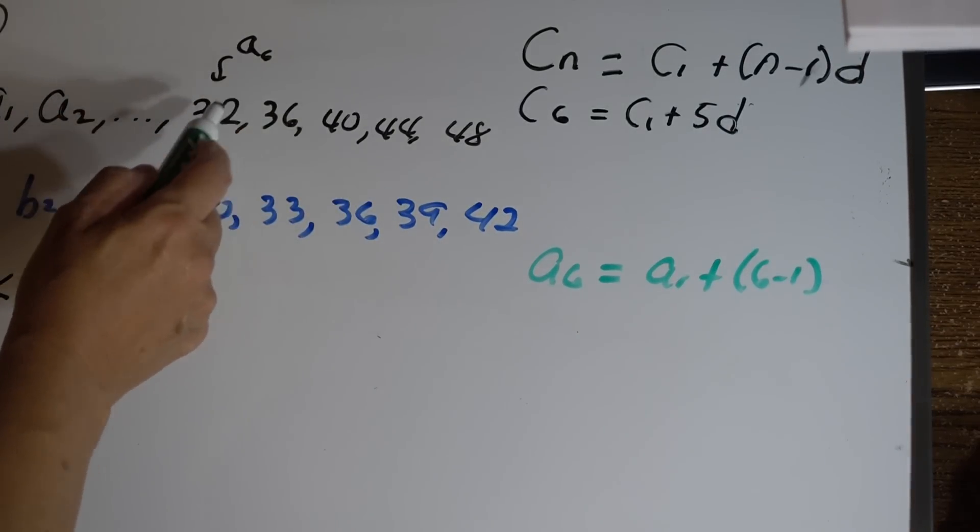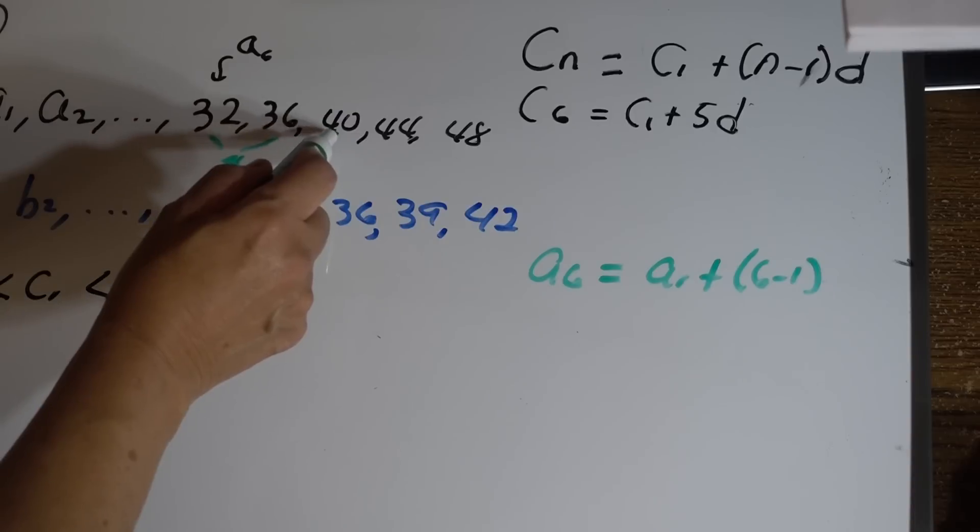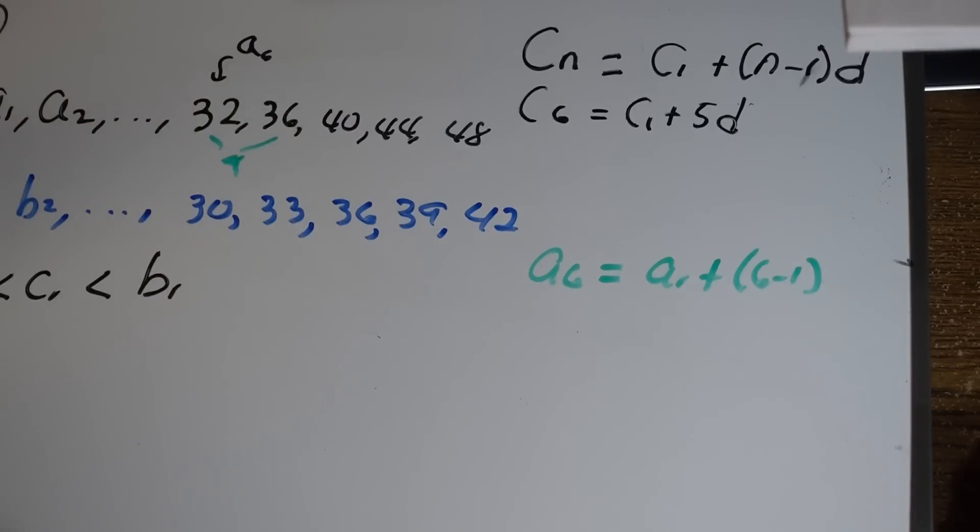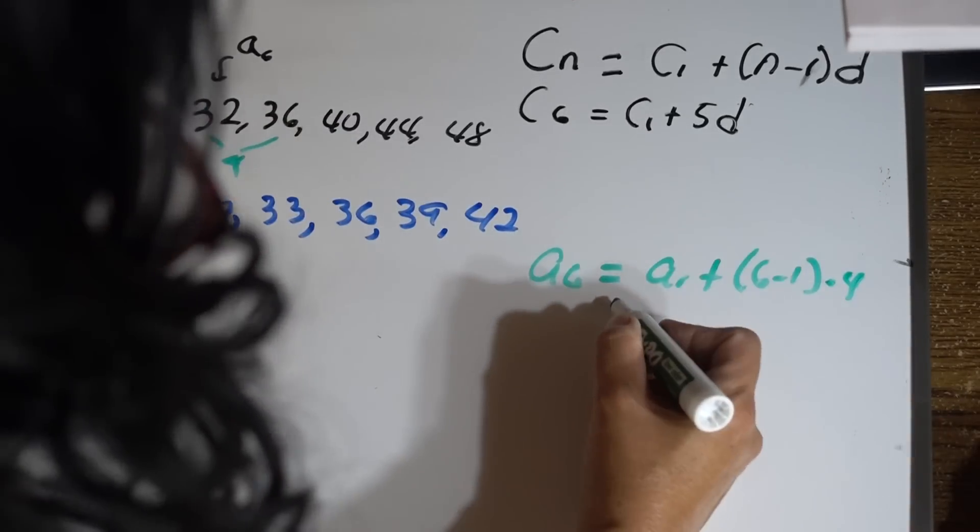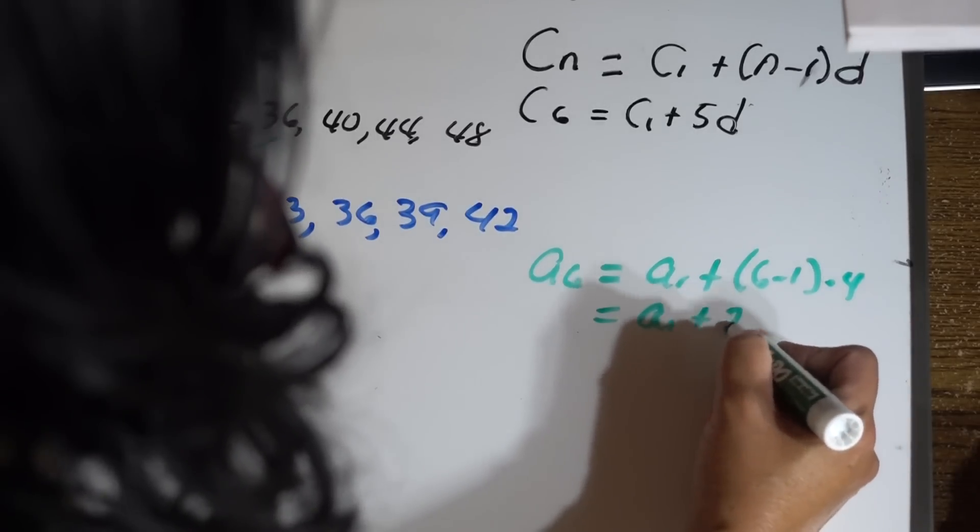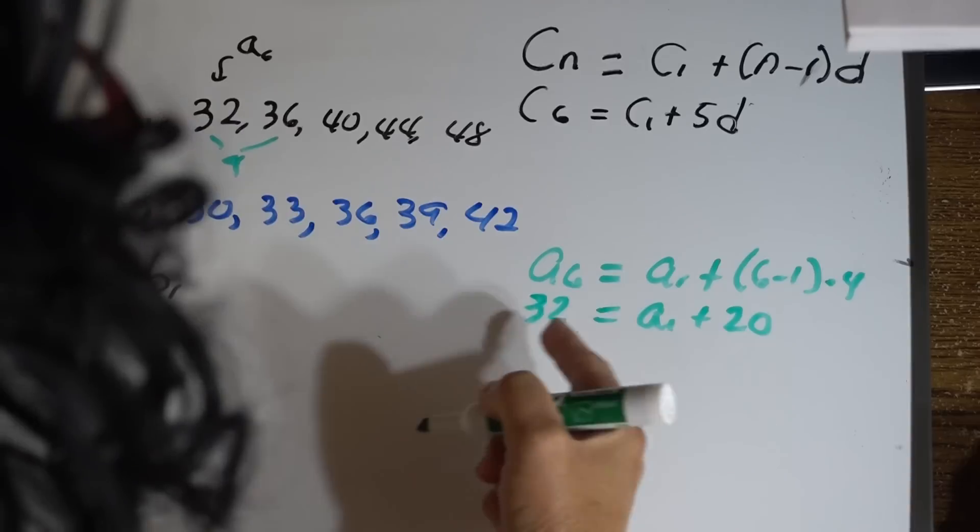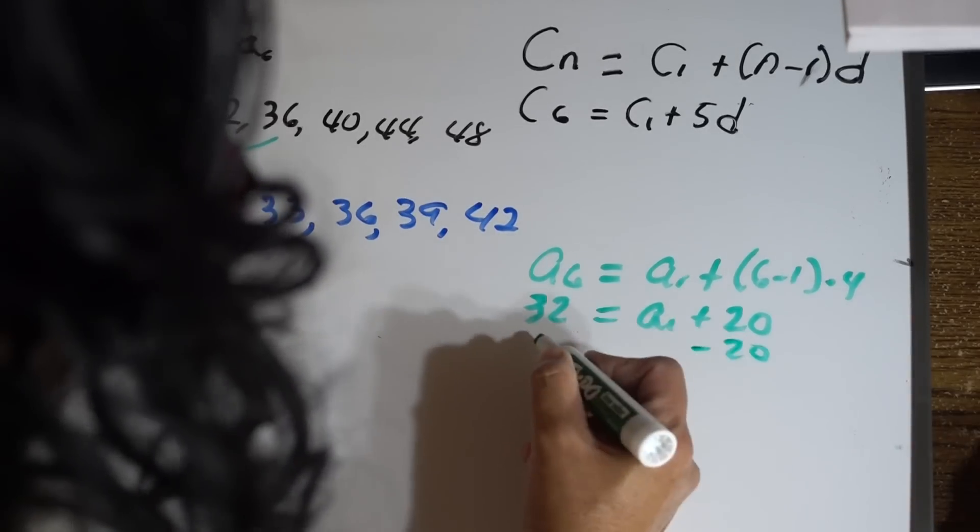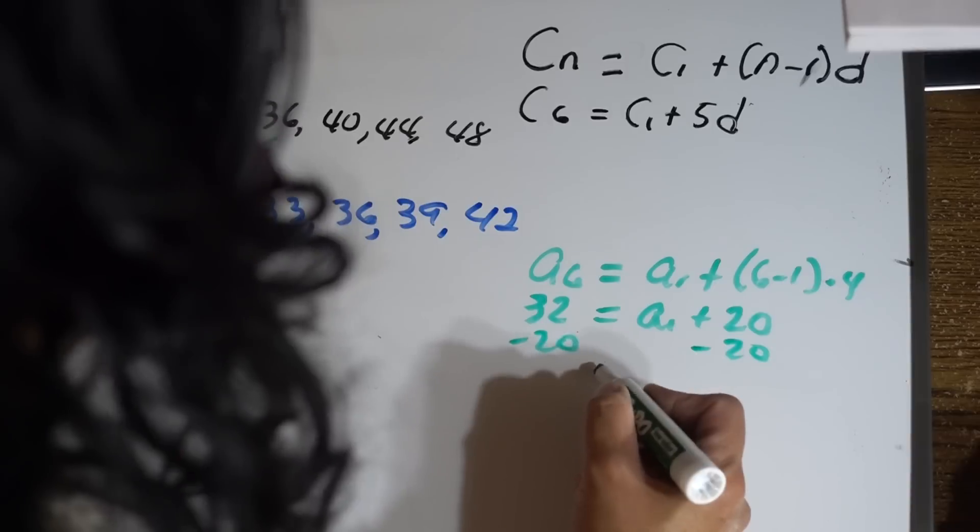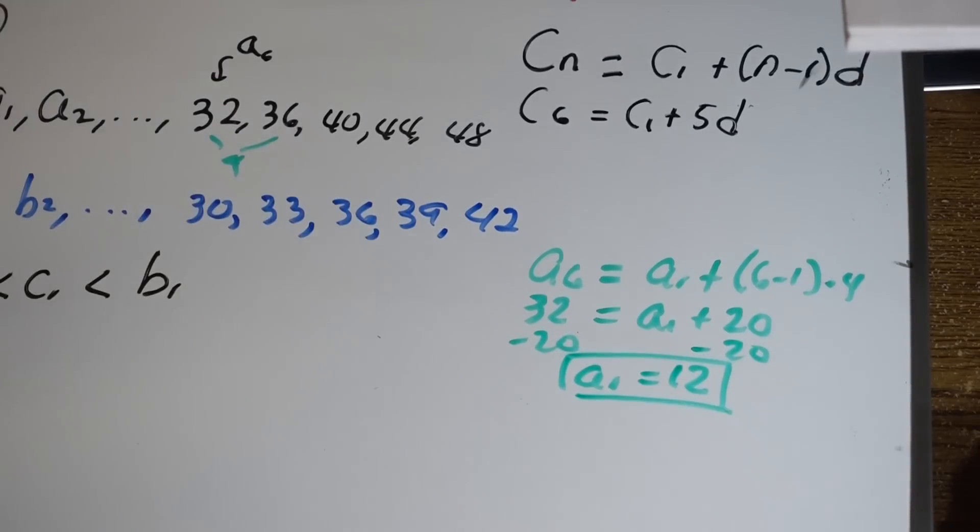The difference of these two we can find because 36 minus 32 is 4, and 40 minus 36 is 4, so this is 4. So that's going to be a_1 plus 5 times 4 is 20. And a_6 is 32. Subtract 20 from both parts and we have a_1 is 12. So this value is 12.